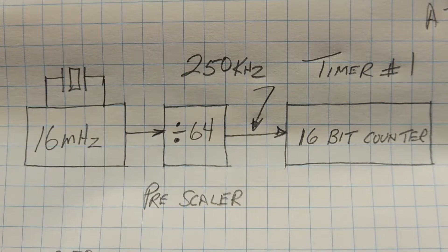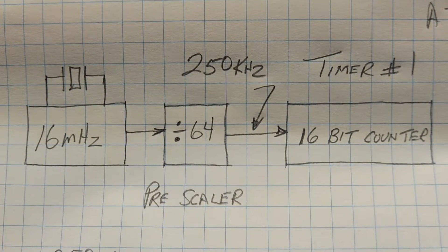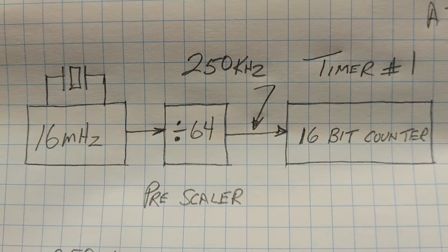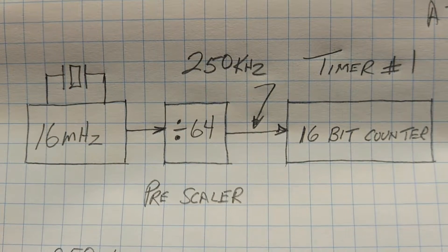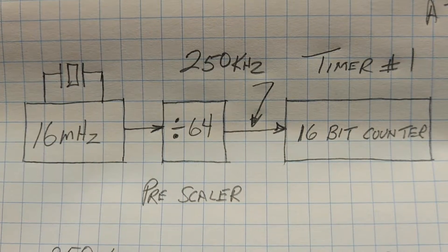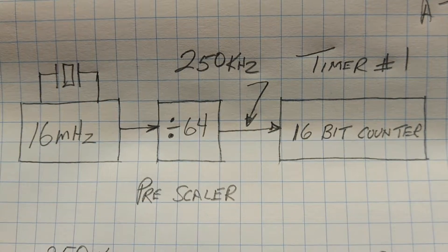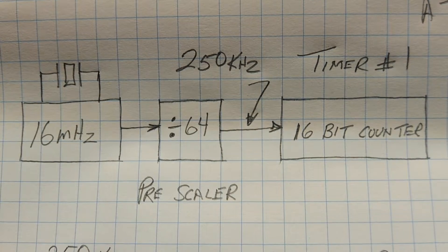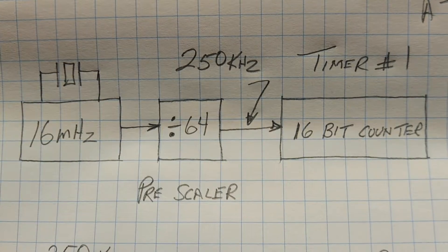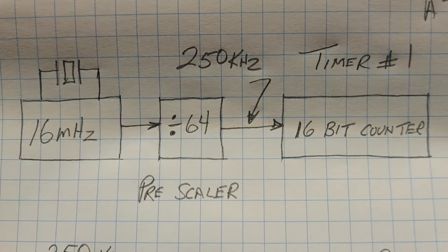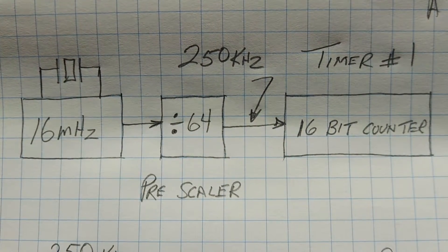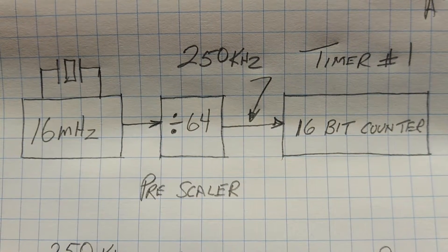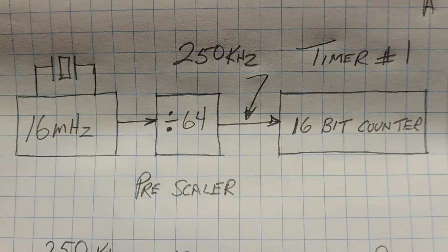So how do we generate pulses to drive our servo motor with a microcontroller? Now in my case, I'm using the ATmega 328p, which is in Arduino Nano, so I'll be using timer number one. Now timer number one is a 16-bit counter, so it counts up to 65,535, and then rolls over and goes back down to zero, and continues over and over again. So we'll take our 16 megahertz clock, we'll divide it by 64 through a prescaler, to give a 250 kilohertz clock into our counter.